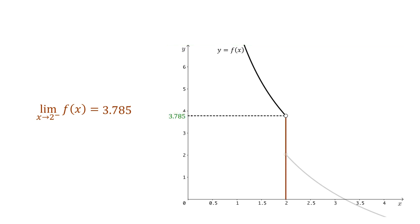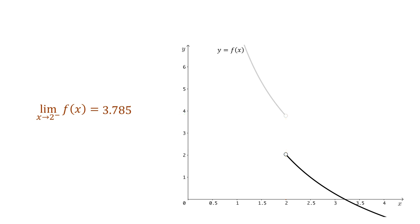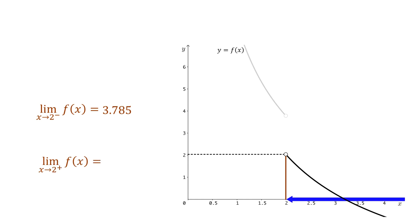Now what about the other piece of the function for values of x that are larger than 2? To help us think about this, I'll temporarily dim the piece of the function corresponding to values of x that are less than 2, and it's clear that the height of this hole is not 3.785. To find the height of this hole, we can look at values of x that are greater than 2. When we imagine these values of x getting closer to 2, the height of the hole is written like this, and we call this the limit as x approaches 2 from the right of f, indicated by the positive sign.